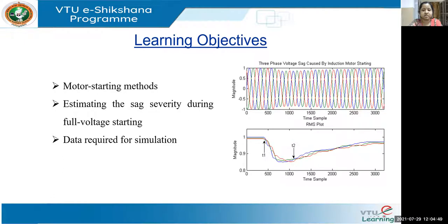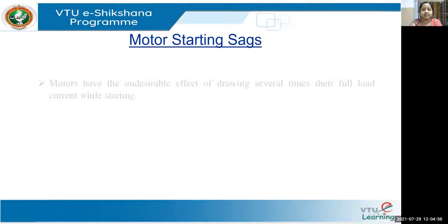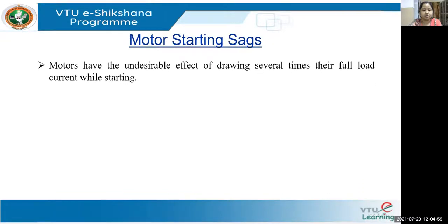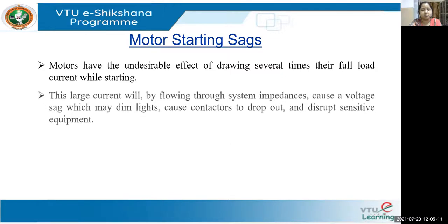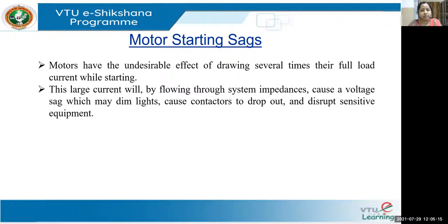We have usually seen a dip in voltage whenever any motor starts. In motor starting, there is an undesirable effect — the drawing of several times of full load current when it starts. This large current, flowing through the system impedances, will cause a dip in voltage, which is sometimes visible to our eyes when light intensity reduces. We notice that in day-to-day life, which gives us an idea that there is a dip in voltage.